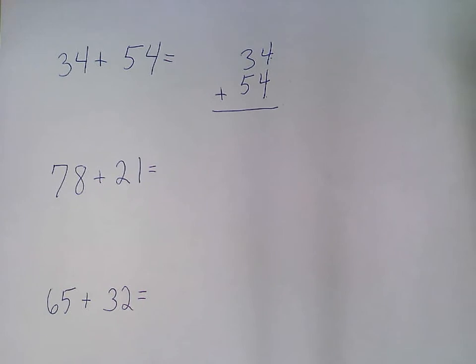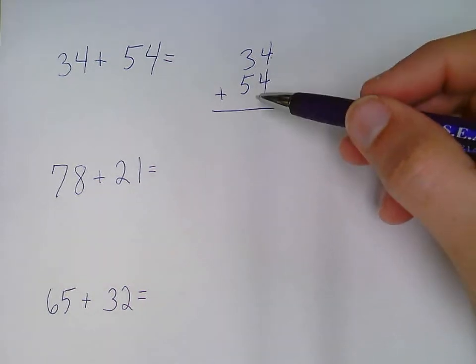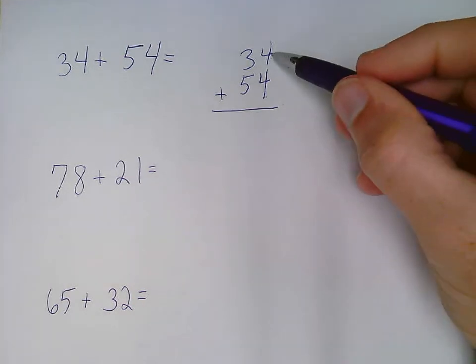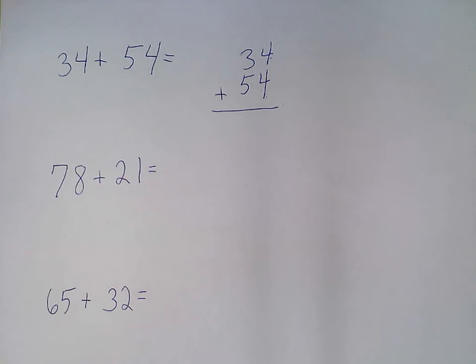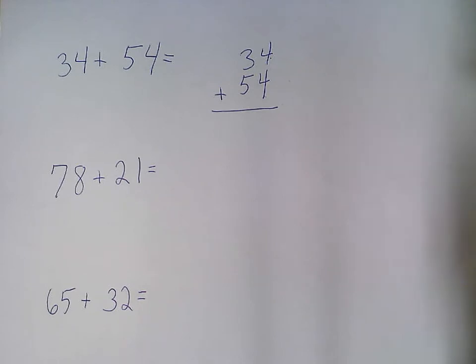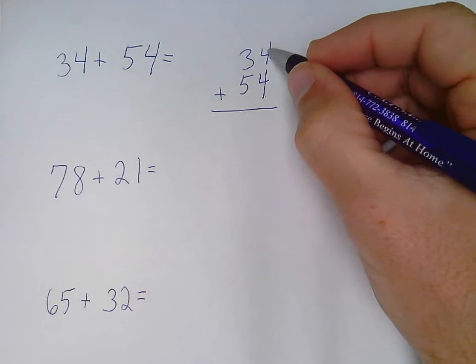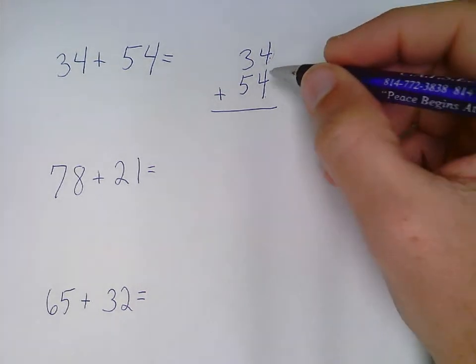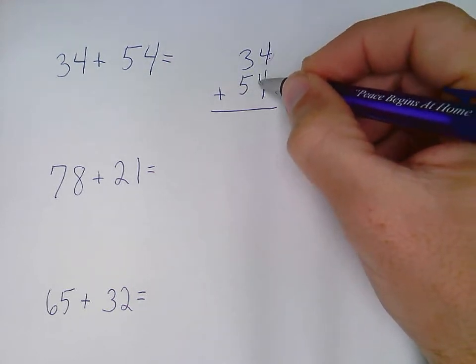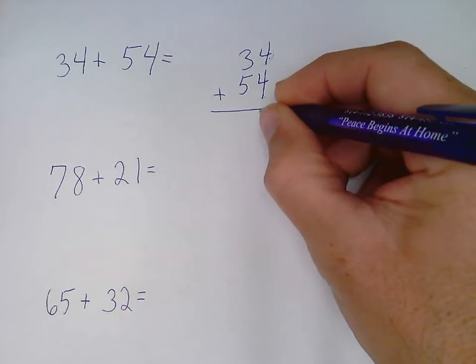After everything's lined up, I'm going to start in the ones column and add those digits. To add 4 and 4, I can have my facts memorized, but if I don't, I can use my touch dots or I can even use my fingers. For 4 plus 4, I'm going to grab the bigger number. Since these are both the same, it doesn't matter which one I grab. I'll circle this 4 and then count the touch dots on the other one. Grabbing the 4: 5, 6, 7, 8. So 4 plus 4 is 8.